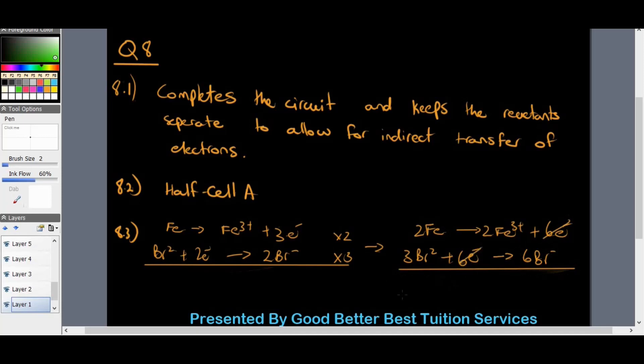And we begin to write down our net equation. You'll keep the same color, but I'm going to switch color. Obviously, we know that we write down oxidation first from the top. So we write down 2Fe.